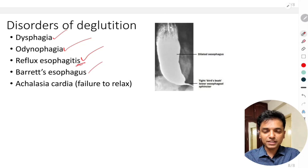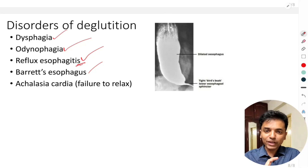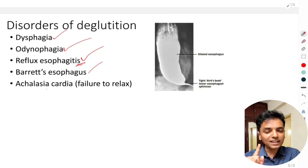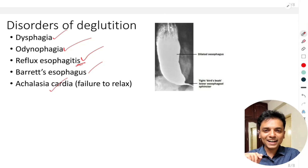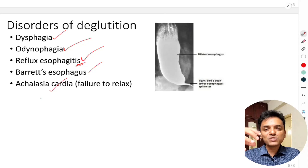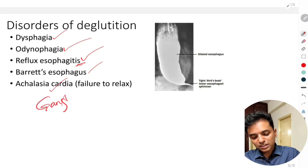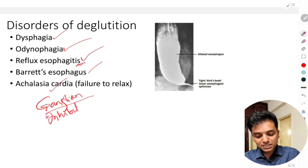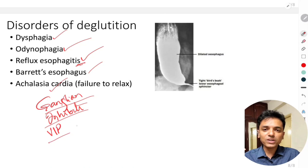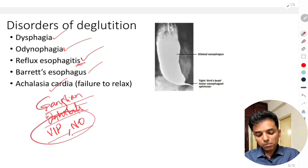Barrett's esophagus is a consequence of repeated reflux esophagitis. Repeated reflux causes a change in the structure of the epithelium at the lower end of the esophagus, a process called metaplasia. Barrett's esophagus is also a pre-cancerous condition. Another important disorder is achalasia cardia, in which the lower esophageal sphincter and the lower esophagus fail to relax when the peristaltic wave arrives. This occurs due to lack of ganglion cells, which are inhibitory cells that release vasoactive intestinal peptide (VIP) and nitric oxide.